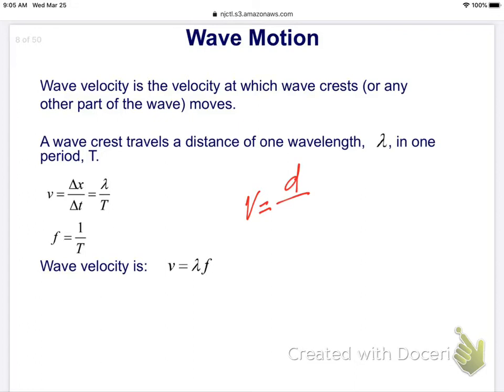We know that velocity is distance over time, meters per second. We know the distance in a wave is lambda. And the time that it takes to travel one wavelength is known as period. So we get the equation that velocity equals lambda over T. And we know that frequency is equal to one over period.